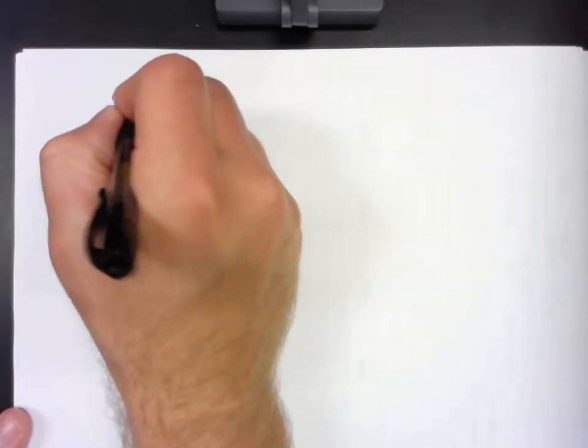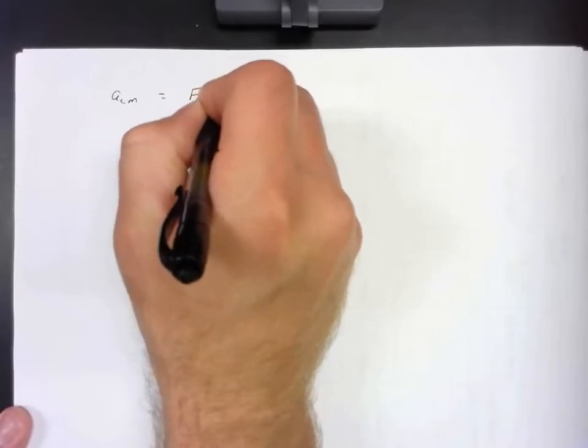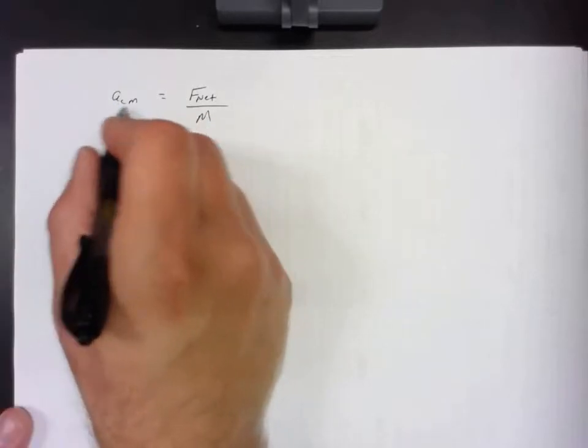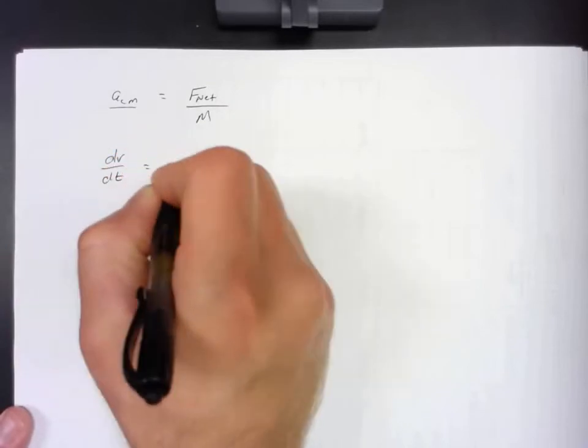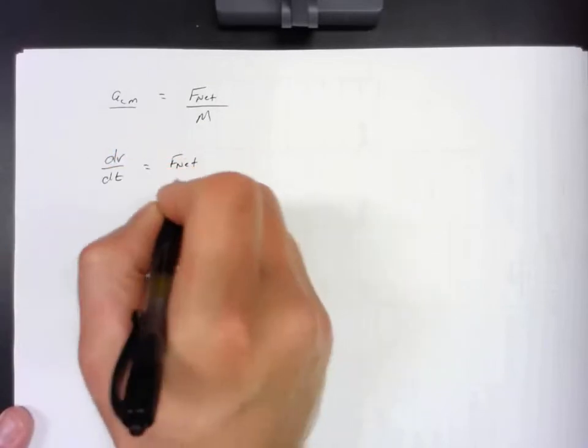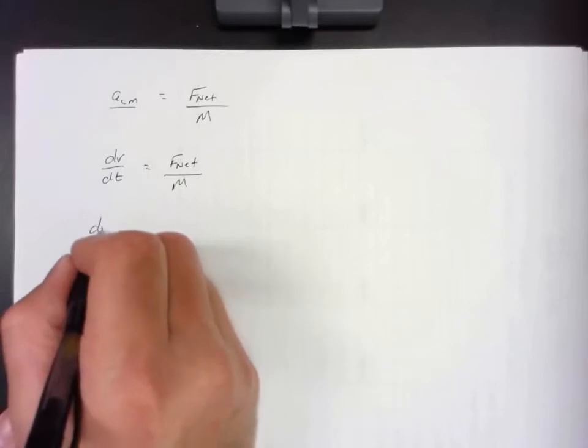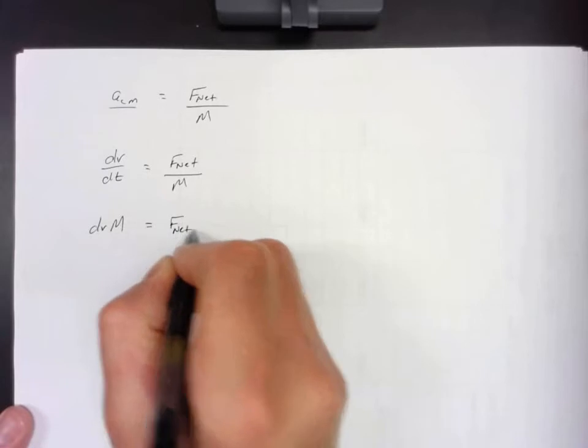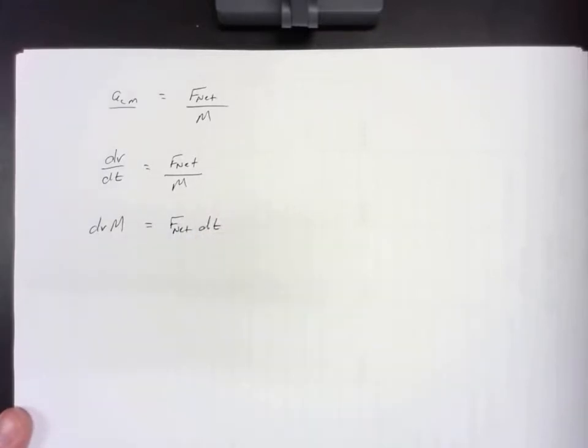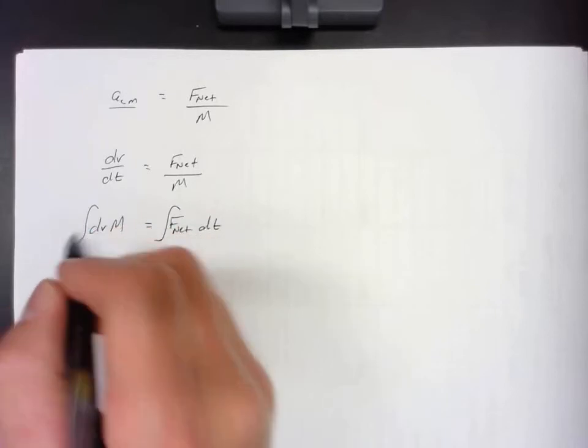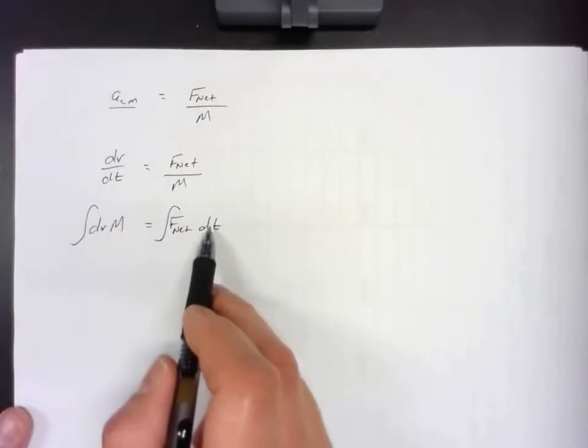If we take that same equation and we wanted to figure out how the velocity is affected, this is dv dt. This is the differential equation. And if we rearrange this, so I'm going to bring the mass over, so I have dv times the total mass. Here I have the net force dt. If we integrate both sides, this side with respect to v, this side with respect to t.